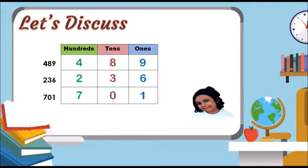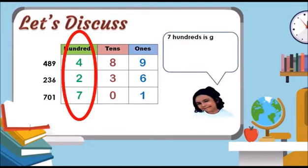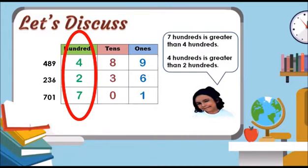Let us compare the hundreds. The hundreds are different. Seven hundreds is greater than four hundreds. Four hundreds is greater than two hundreds. So, 701 is the greatest, 236 is the smallest.